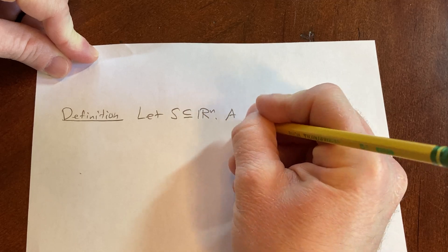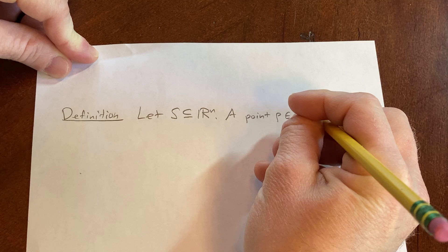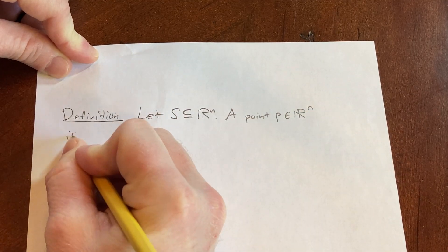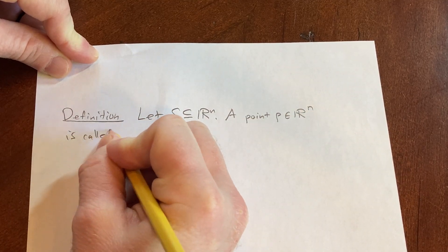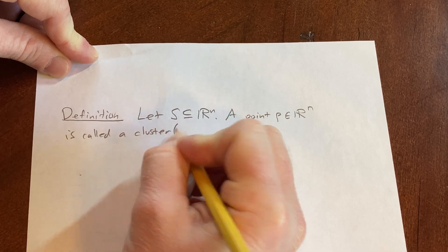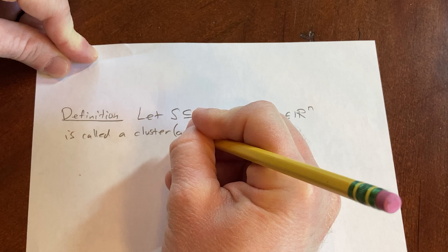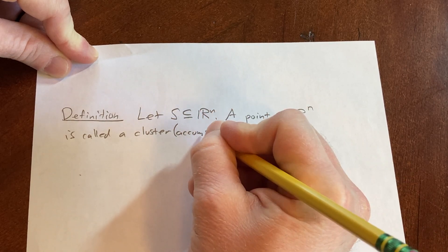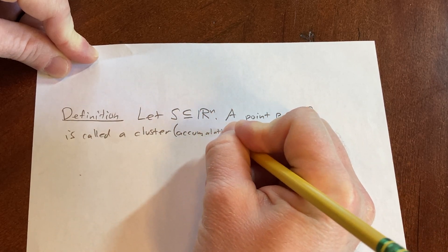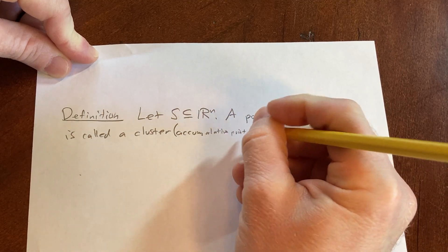A point P in R^n is called a cluster point, which is also called an accumulation point. Accumulation point is another name, or a limit point.